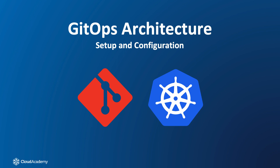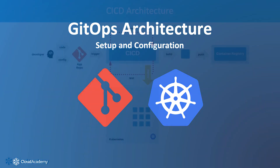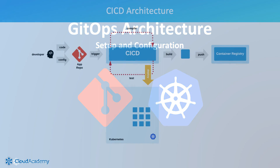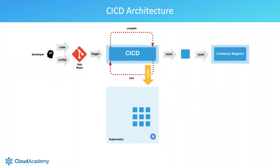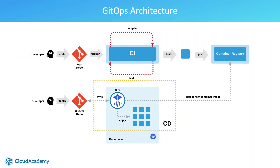Welcome back. Now that we know the basic properties of GitOps, let's consider what this looks like in terms of an actual architecture and deployment. As seen here, the CI-CD system gets split apart such that only the continuous integration component remains, with GitOps taking over the role of the continuous delivery component, albeit in a much more improved way. How is this achieved?